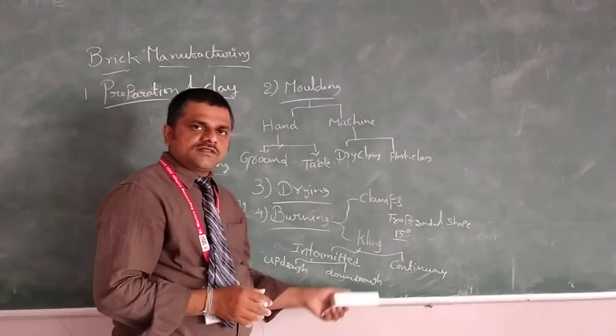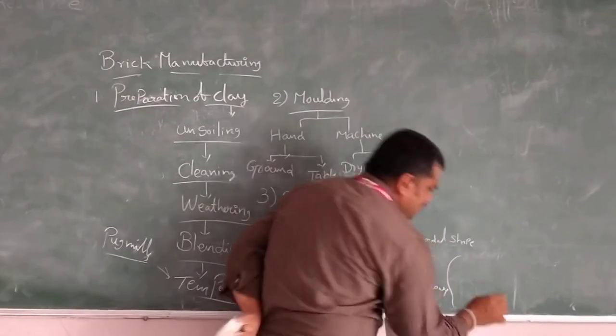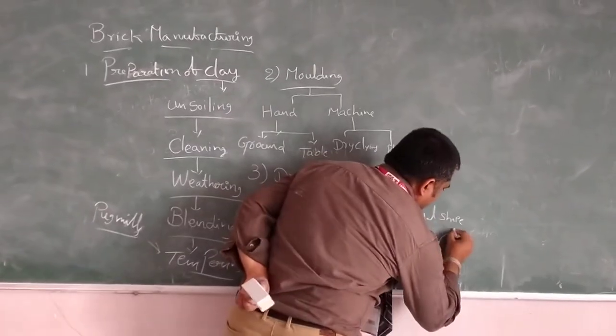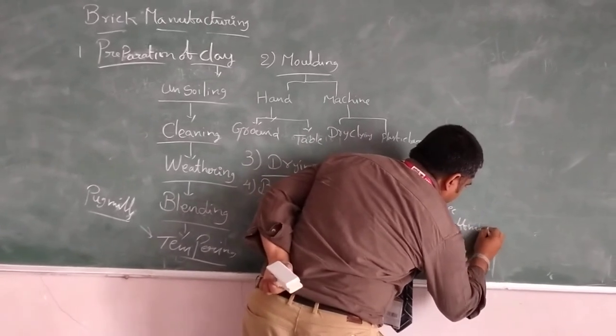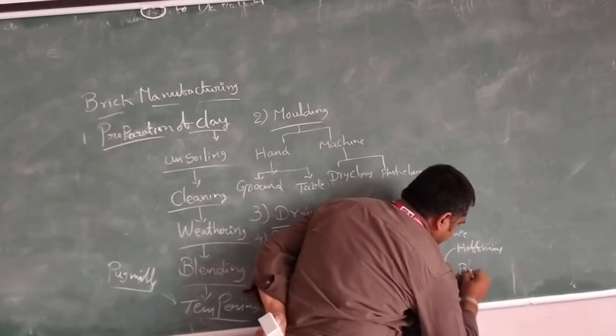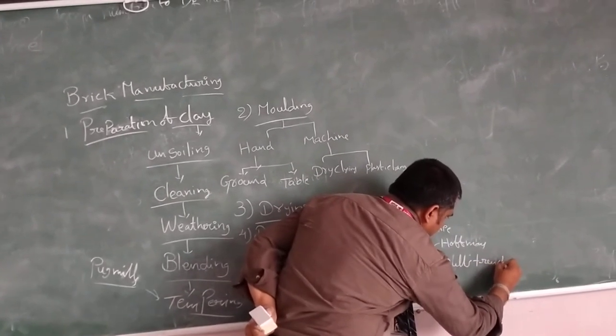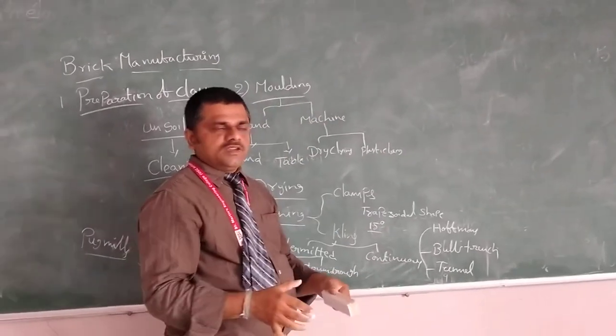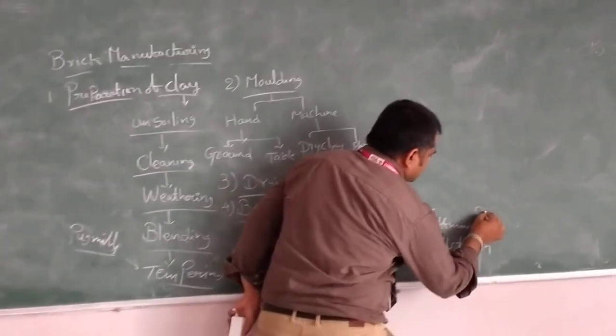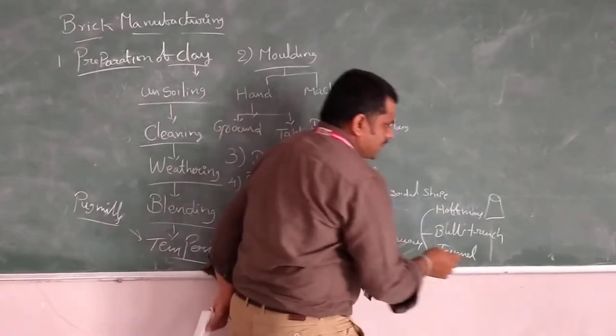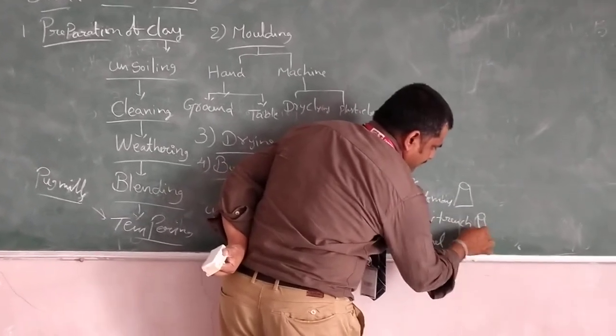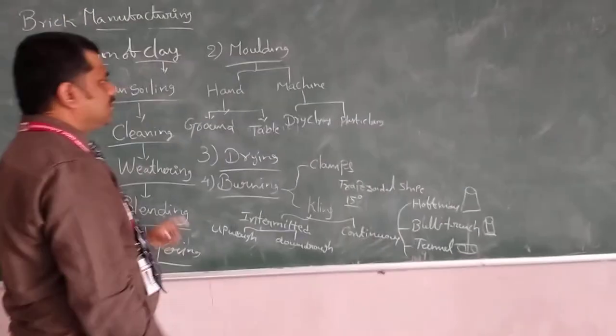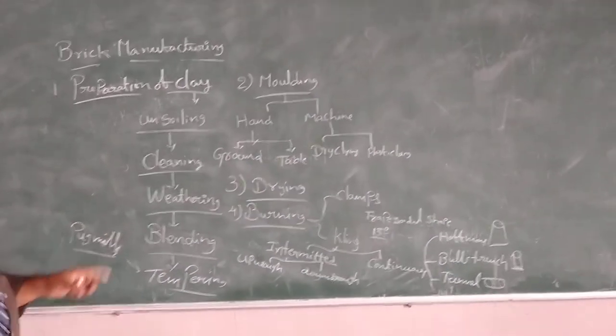At the same time, continuous kilns have three types. But it depends on shape of the entire kiln. These are the entire four stages of brick manufacture.